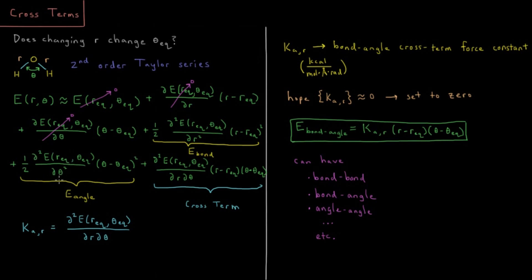And then the last term we have, which is unexplained thus far in our energy function, is the second derivative of the energy, or the second mixed partial derivative of the energy with respect to the bond length and the bond angle. So how does the energy change when we are changing both? And then that term would be multiplied R minus R equilibrium, times theta minus theta equilibrium. So this term here is what we would call the cross term. It's when we vary one of these parameters, or when we vary one of these variables, how does it affect the values of the others?